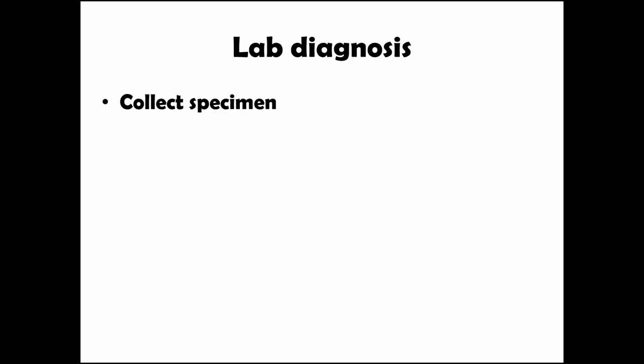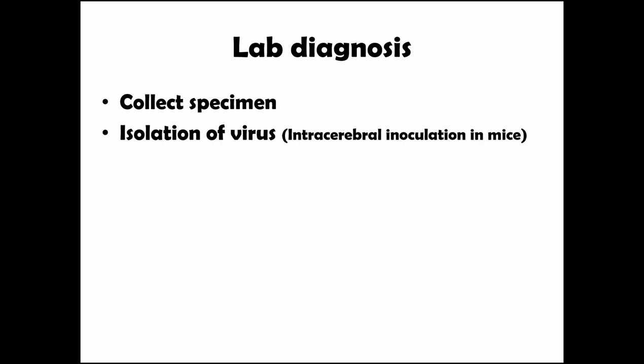For lab diagnosis, first the appropriate specimen must be collected based on the site of infection. For example, in herpangina, where there are vesicle-like blisters in the oral cavity and pharynx, specimens must be collected from throat swabs and from the lesions. The virus can then be isolated by various methods.